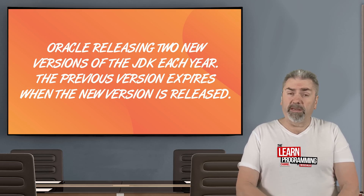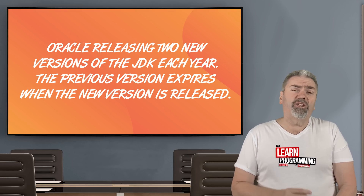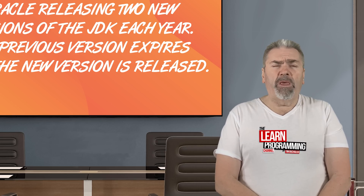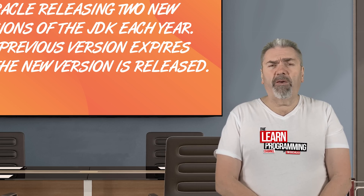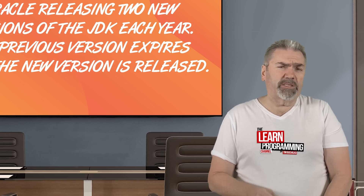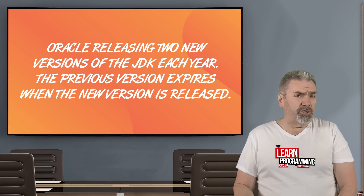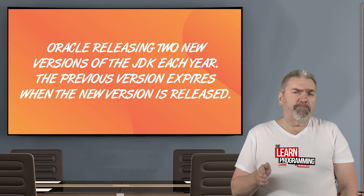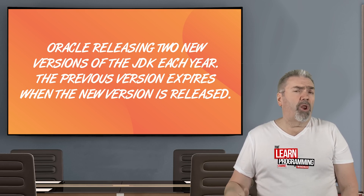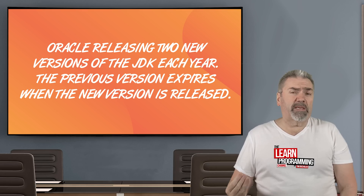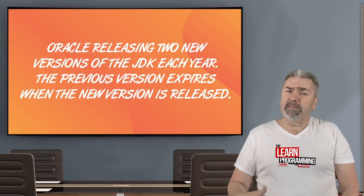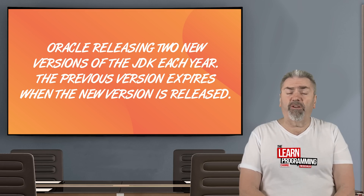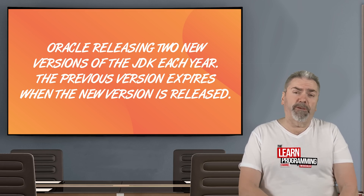I'm recording this in March 2019 and JDK 12 has just come out. What's confusing about this release schedule is every six months they're releasing a new version, and the previous version is basically expiring and no longer being supported with no updates coming through. This makes it quite confusing, as a developer, to try and figure out which version you should be using.